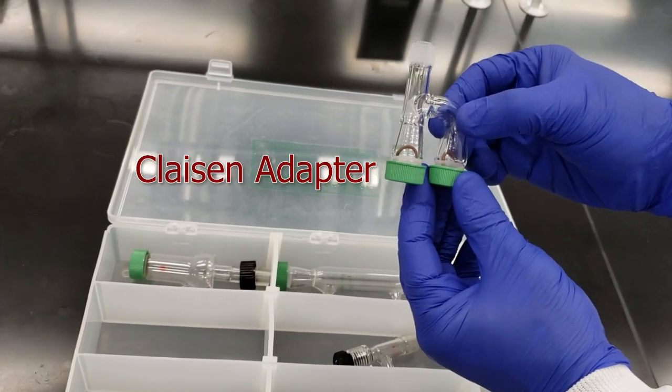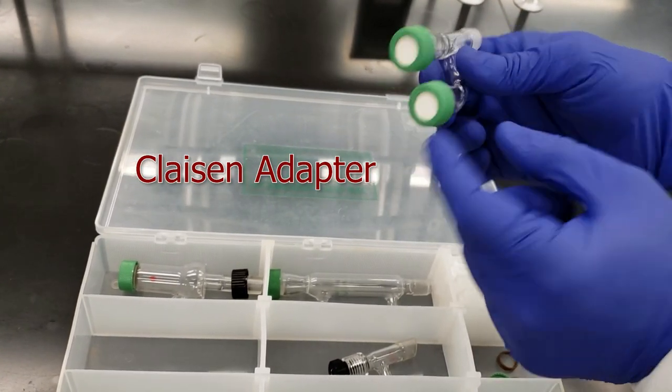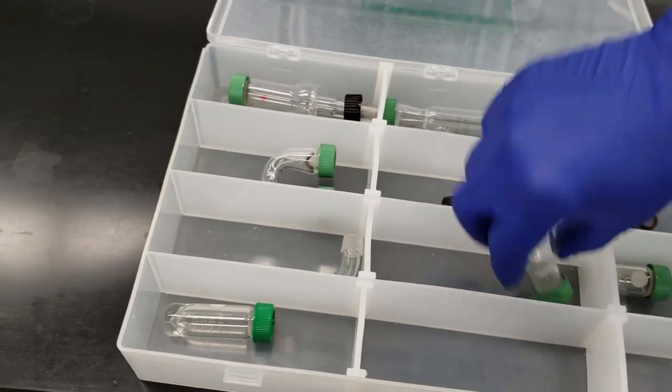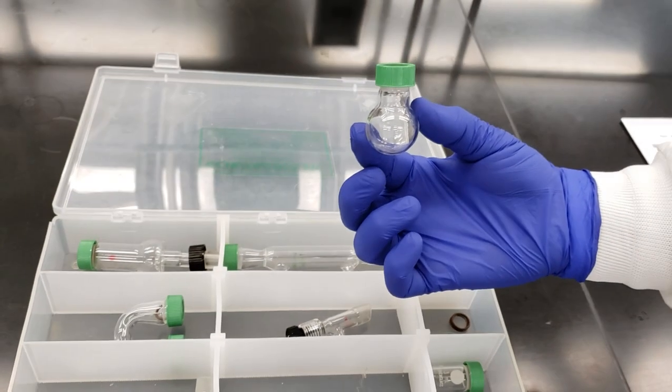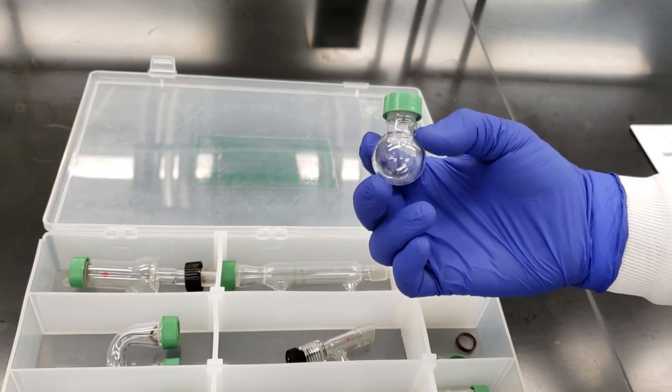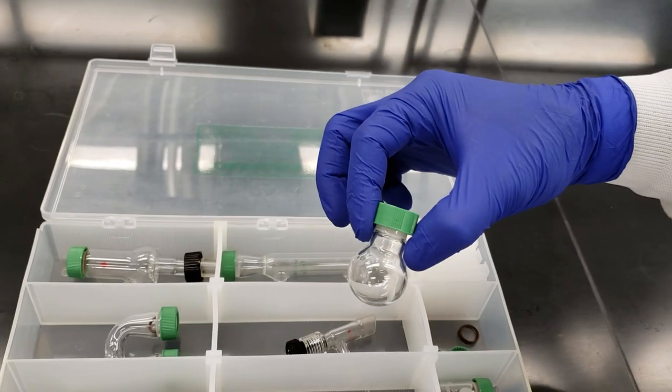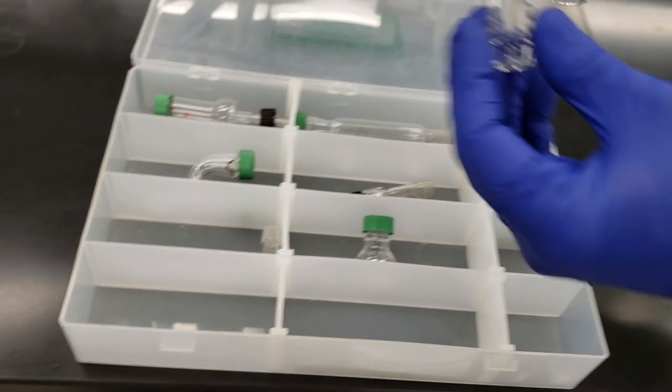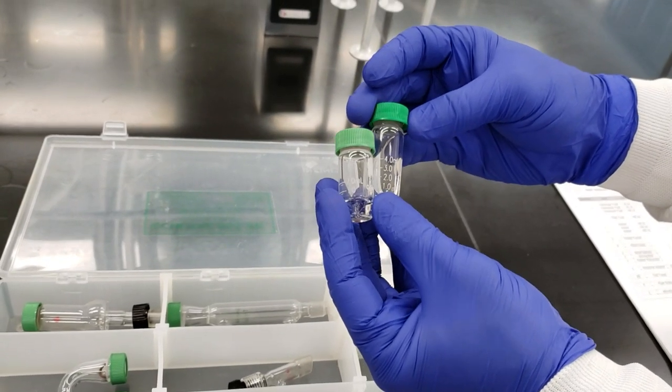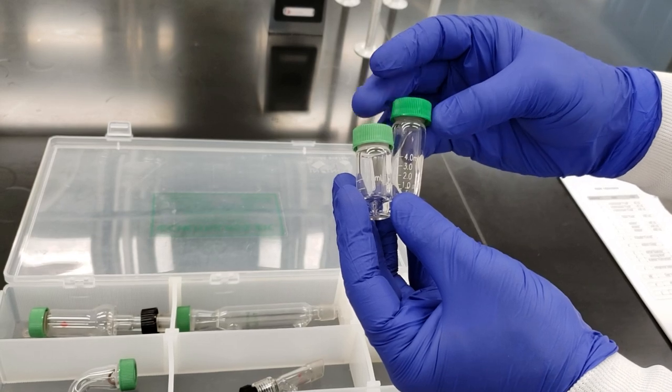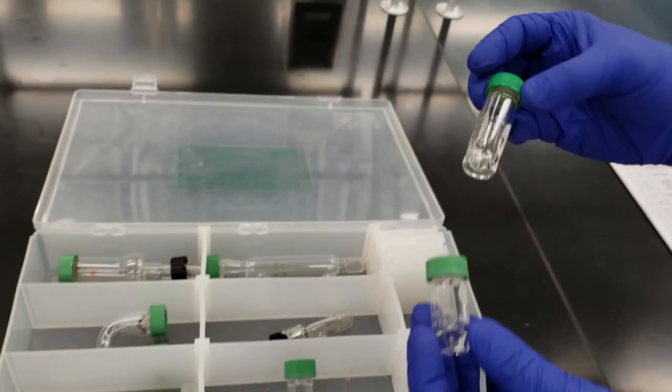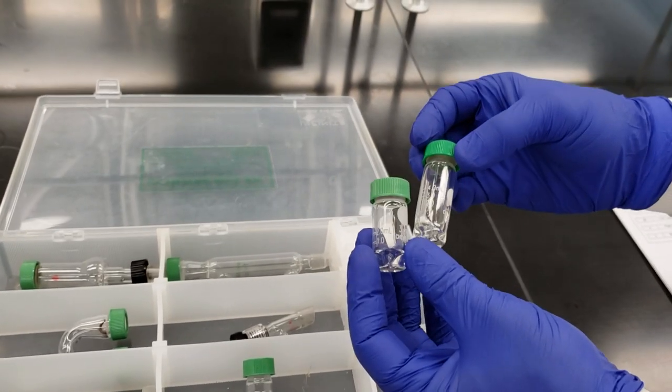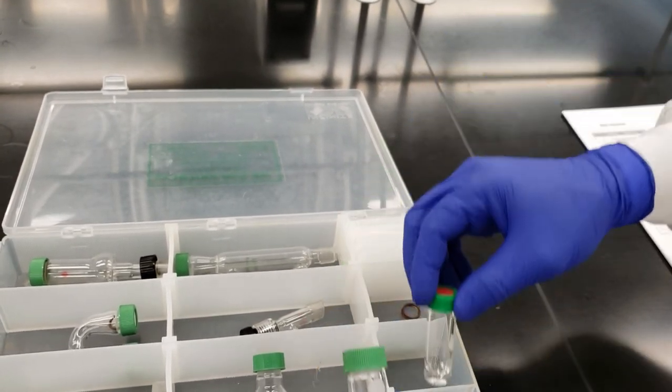We have a Claisen adapter complete with O-rings and caps. We've got a 10 mL round bottom flask, the smaller counterpart to the 24/40s. We have two conical vials, a 3 mL and a 5 mL, which we can heat in or use as containers for products or liquids.